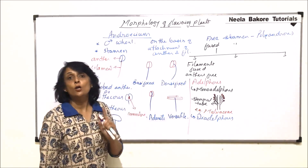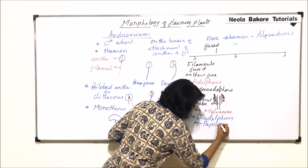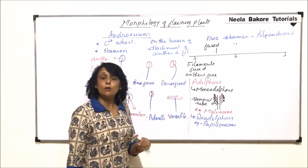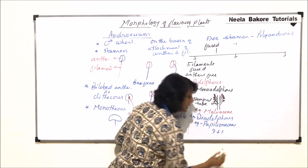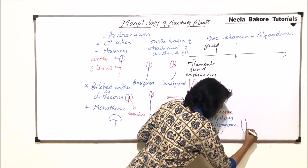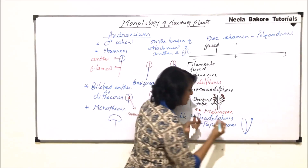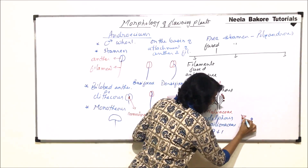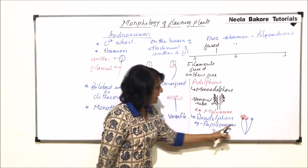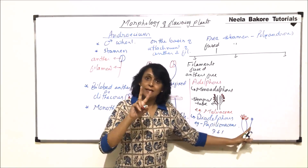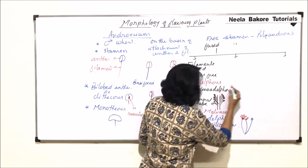The second type is diadelphous — meaning there would be two bundles — and this is seen in the Papilionaceae family. In Papilionaceae, nine filaments fuse to form one bundle and one remains free. So there is one bundle of nine and one completely free stamen, forming two bundles in total. That is why it is known as the diadelphous condition.